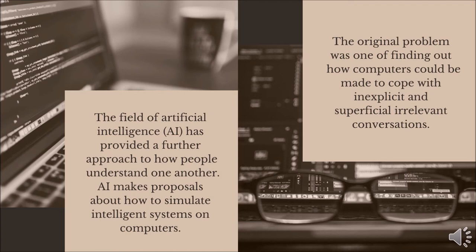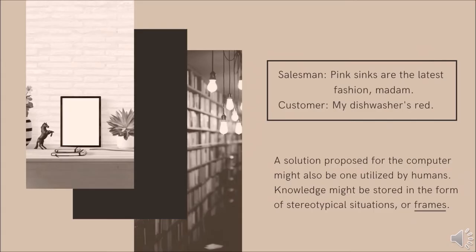The original problem was one of finding out how computers could be made to cope with inexplicit and superficially irrelevant conversations. This is an example of an irrelevant conversation. A solution proposed for the computer might also be one utilized by humans. Knowledge, it was suggested, might be stored in the form of stereotypical situations, or frames. So, a framework is a basic conceptual structure, as of ideas. These memorized frameworks are adapted to fit in with present reality, so they are altered as required.